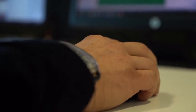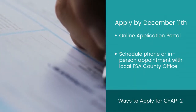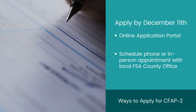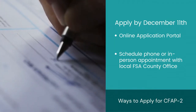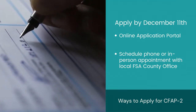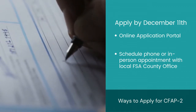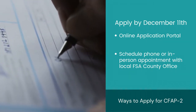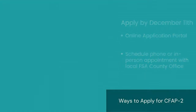Once you've decided you meet both applicant and commodity eligibility requirements, you can submit an application for CFAP II assistance. Producers can apply until December 11, 2020. However, we encourage you to submit your application as soon as possible to ensure that sufficient funds remain. Producers have the option to complete their application online through the CFAP II application portal or by working directly with their local Farm Service Agency office.